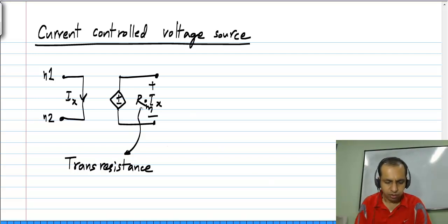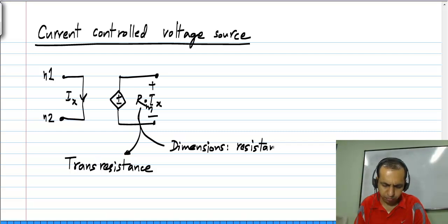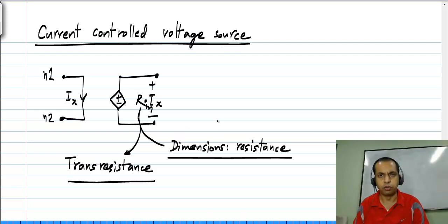Obviously, this has dimensions of resistance because it multiplies the current to result in the voltage, and it is called the transresistance of the current controlled voltage source.